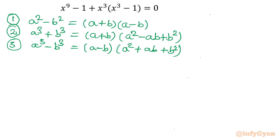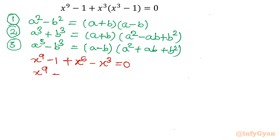Let us get started with our problem. I will expand first: x power 9 minus 1 plus x power 6 minus x cubed equals 0. Now let us write in descending power form: x power 9 plus x power 6 minus x cubed minus 1 equals 0.